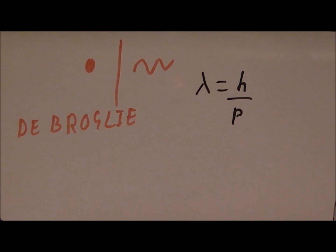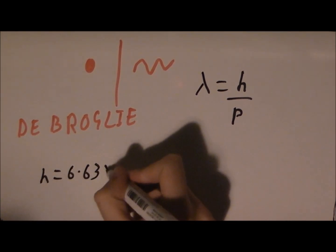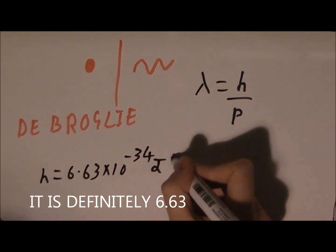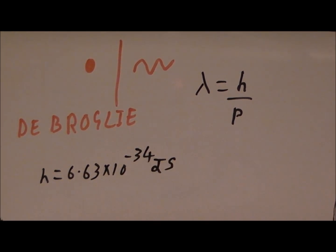We don't see matter acting as waves in everyday life, because Planck's constant is absolutely tiny. It's 6.62 times 10 to the minus 34 joule seconds. So the wavelength of a human walking would be about a billionth of a billionth of a billionth of a hundredth of a millimetre. However, De Broglie's equation is useful for minute particles like protons and electrons.